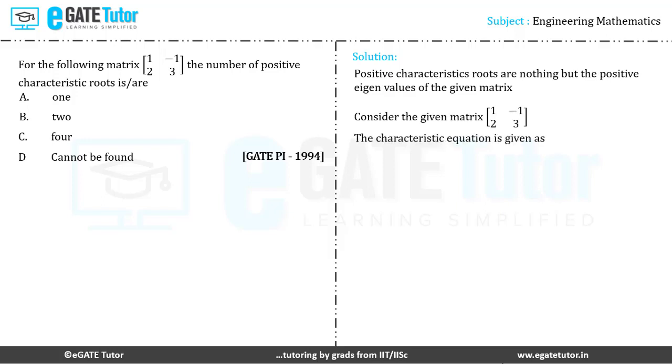The characteristic equation is given as determinant of (A - λI) = 0. Upon expansion of the determinant, we get the expression to be (1 - λ)(3 - λ) + 2 = 0.